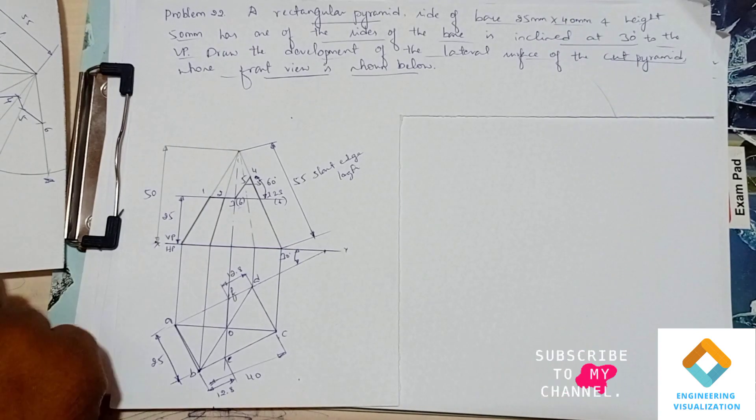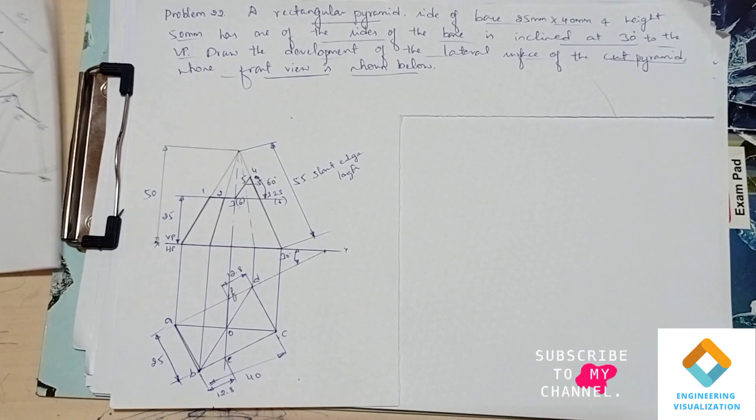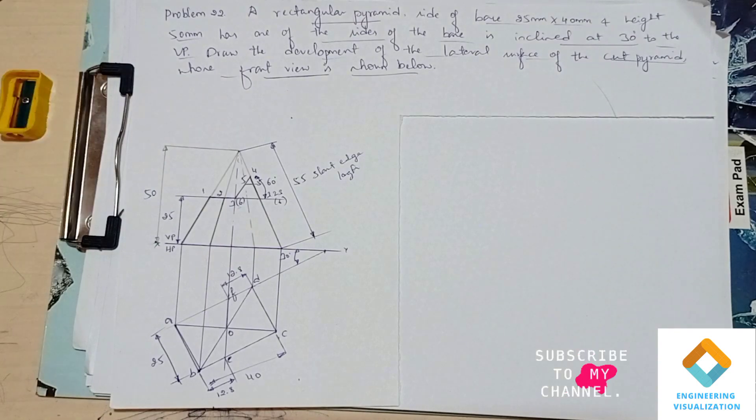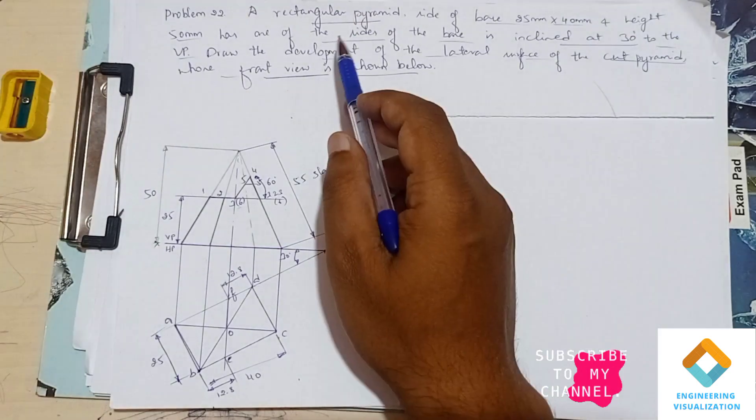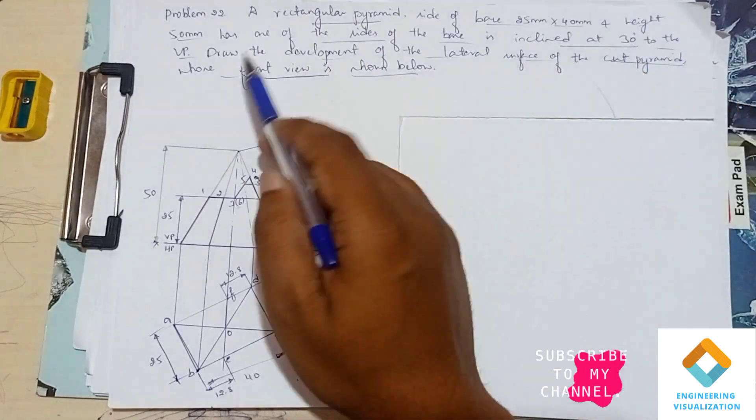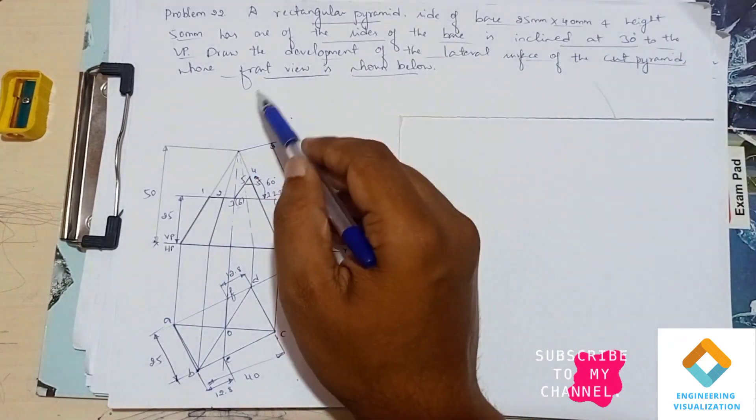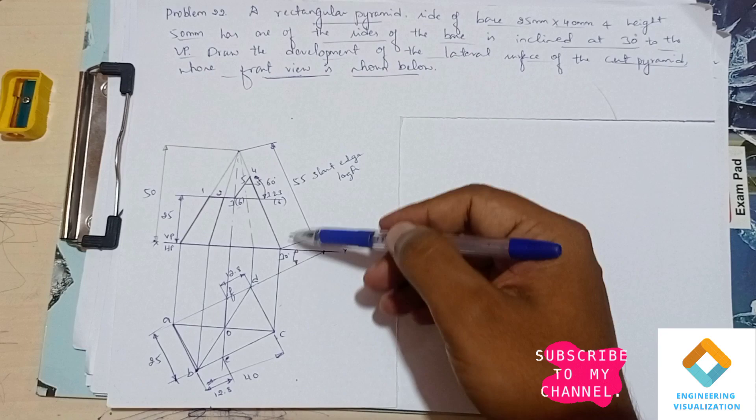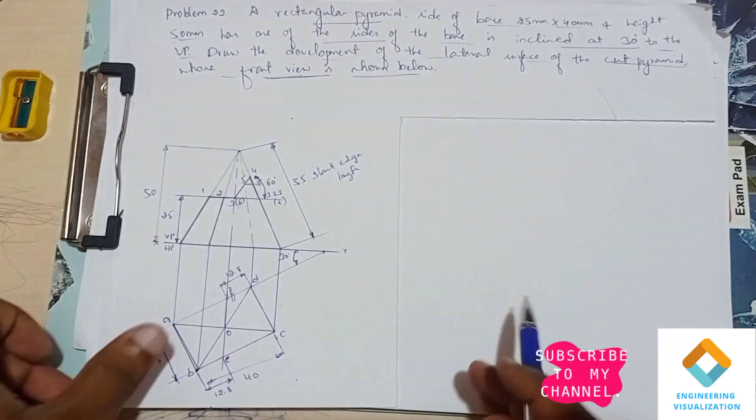Welcome to Engineering Visualization Channel. The next problem is a rectangular pyramid of base side 25 and 40mm and height 50mm. It has one of its base edges inclined at 30 degrees to PP. Draw the development.